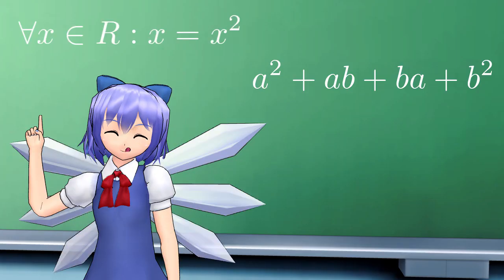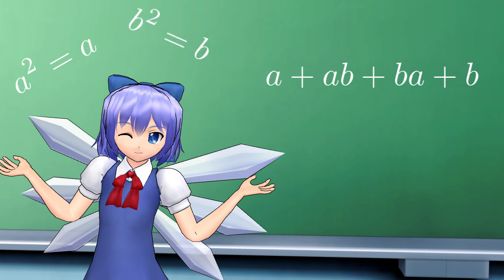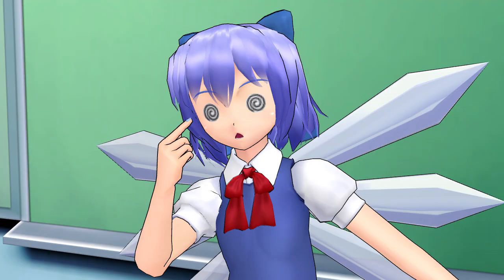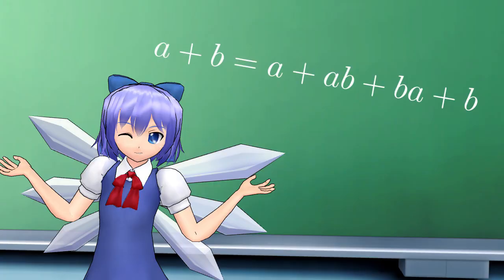Distribute again and you get a squared plus ab plus ba plus b squared. But a squared equals a and b squared equals b for all elements in a boolean ring. So a squared is just a and b squared is just b. Here's the trick — make sure you don't get dizzy. Remember, from the start, this was all equal to a plus b.